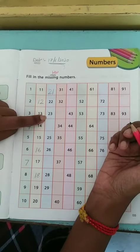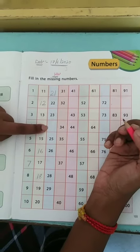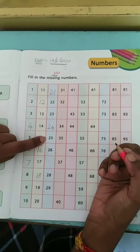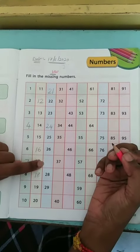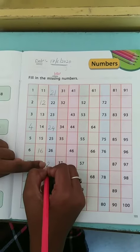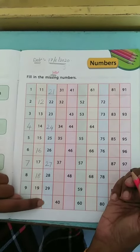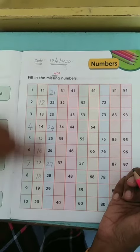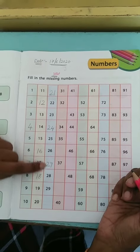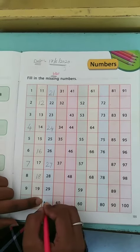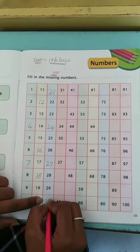Then after 22, 23, what is missing here? 24. Then after 25, 26. Then after 27. Then after 28, 29. And then what is going to come? See here, it's number 2. Line 2 is going on. Then what comes after 2? Yes, 30. Done.